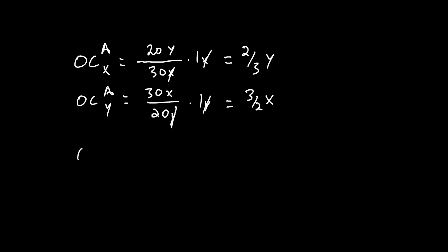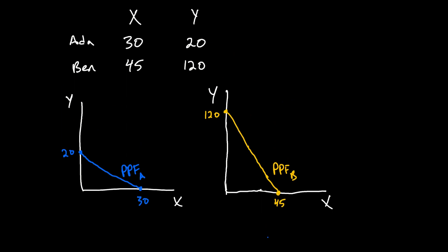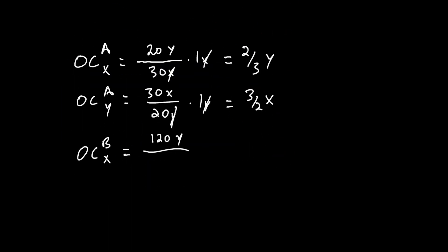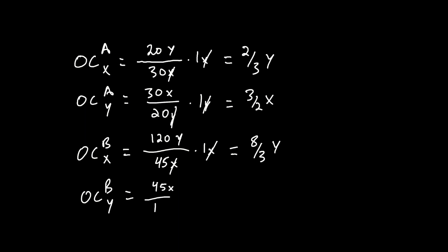Now let's do the same for Ben. Ben's opportunity cost of producing x equals 120 units of good y over 45 units of good x, with the x's canceling out, leaving eight-thirds y. Ben's opportunity cost of producing good y equals 45 x over 120 y, with the y's canceling out, leaving three-eighths x.